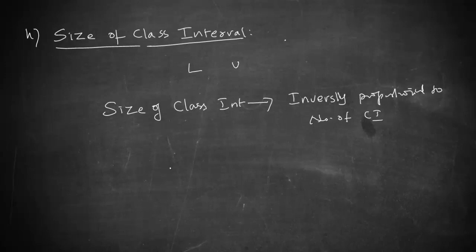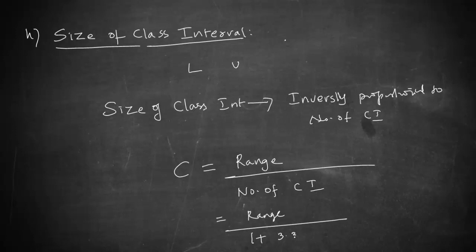In such cases, the size of the class interval, denoted by C, will be equal to range divided by number of class intervals. And of course, we know how to compute the number of class intervals using Sturges' rule: it is range divided by 1 plus 3.322 log n.